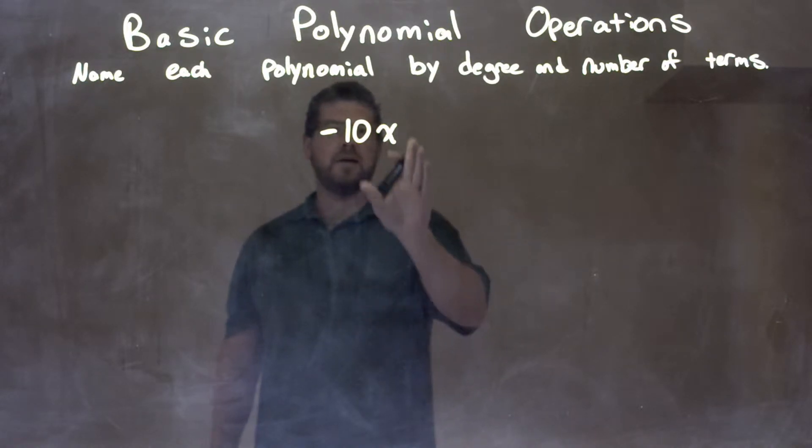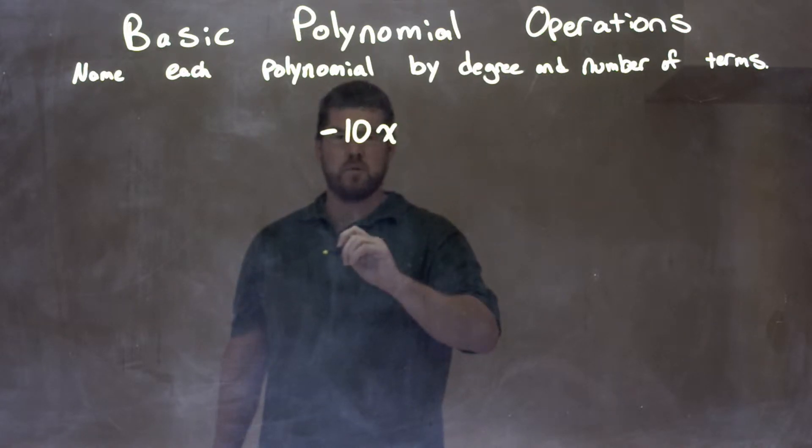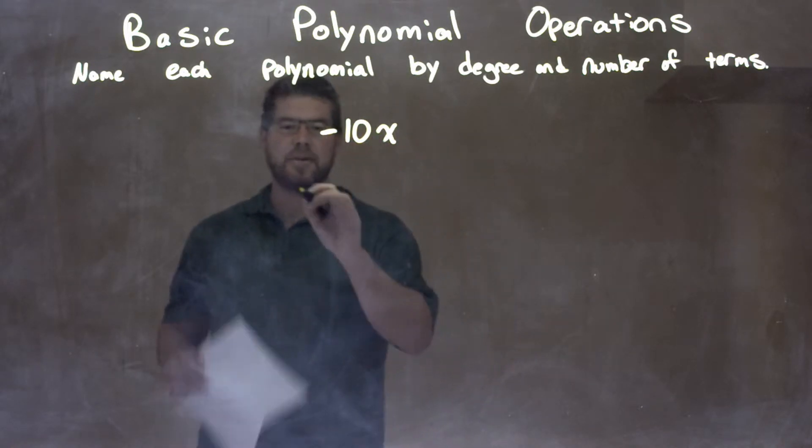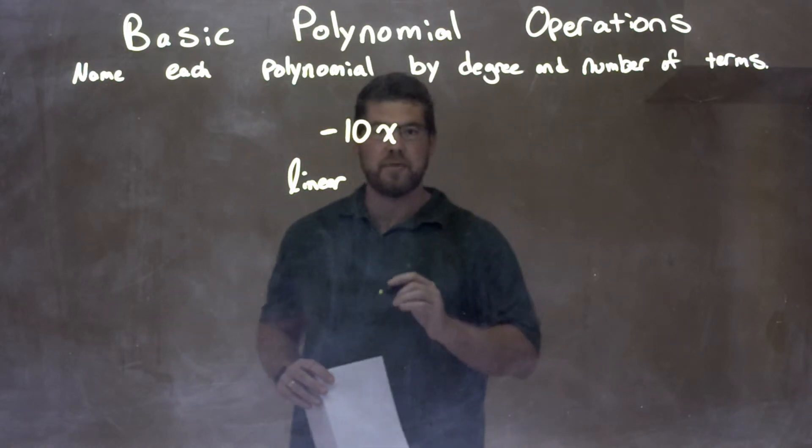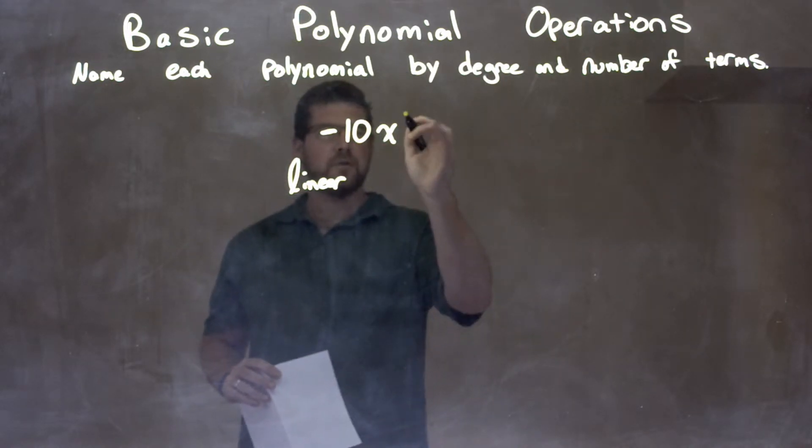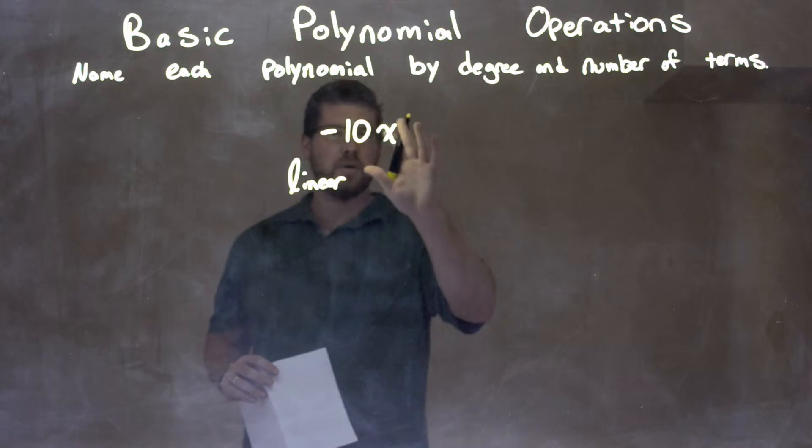Well, first thing we're looking at is we see x to the first degree, right? That is our highest degree, x to the first power. So that's linear. It's x to the first power, that's the highest degree there, it's linear.